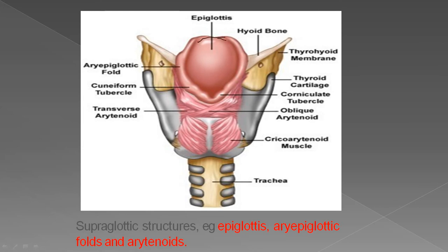Here you can see the epiglottis, the aryepiglottic folds, the cuneiform tubercle, and the corniculate tubercle. The supraglottic structures include the epiglottis, the aryepiglottic folds, and the arytenoids.